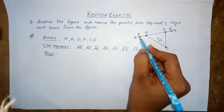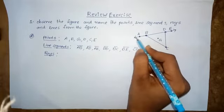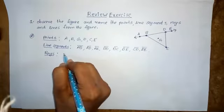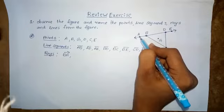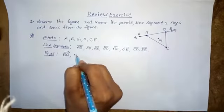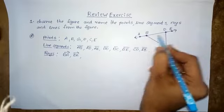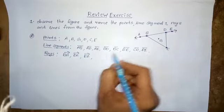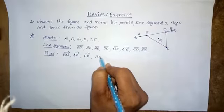From B to A is one ray — B is the initial point, there is no end point, so BA moves endlessly. BA is one ray. From point D to A — DA is another ray. From point E to A — EA is a ray. From point A to E direction — AE is a ray.